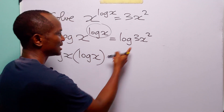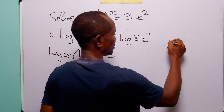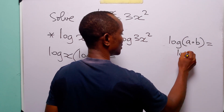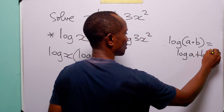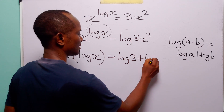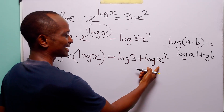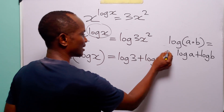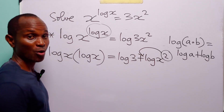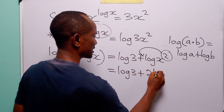Now on the right hand side, remember that 3x² is a product, and log(a·b) = log a + log b. So this can be written as log 3 + log(x²). We then apply the power rule to bring down the exponent 2, giving us log 3 + 2·log x on the right hand side.